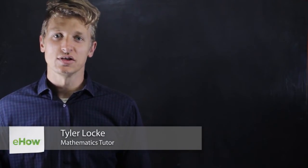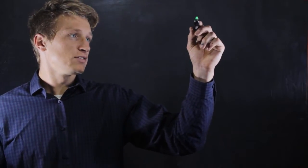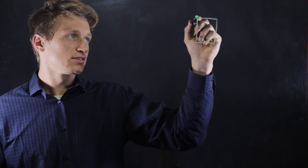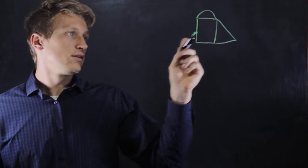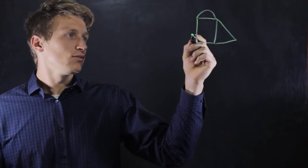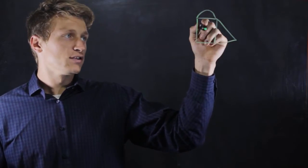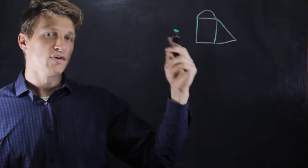Hi, I am Tyler Locke and this is how to solve equations with irregular shapes. Let's say we're given a shape that looks something like this.